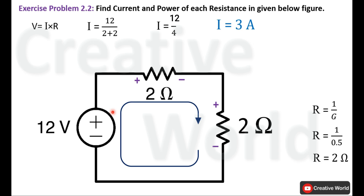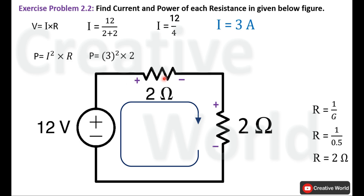This 3A flows through the network and, because of series connection, the same current flows through both resistances. We calculate power using P equal to I square multiplied by R: P equal to 3 squared multiplied by 2 ohm, which equals 18 watt per resistance. Because both resistances have the same value and the same current flows through them, the other 2 ohm resistance also dissipates 18 watt.